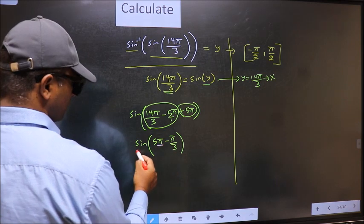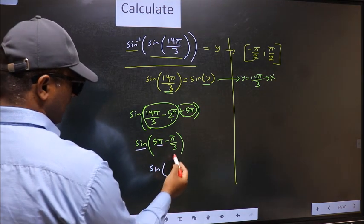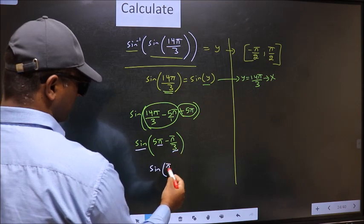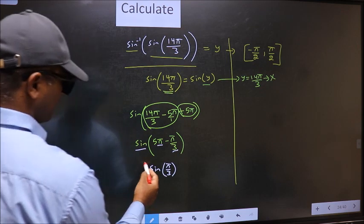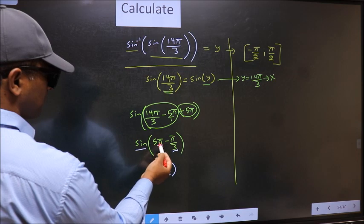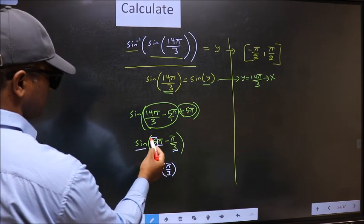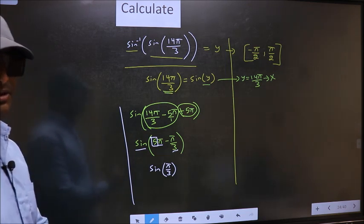Here we have π. So sine is not going to change. It will remain sin. And inside we get this angle π by 3. Now the question is will we get here plus or minus. To answer that we should look at the number before π which is 5. And 5 is odd.